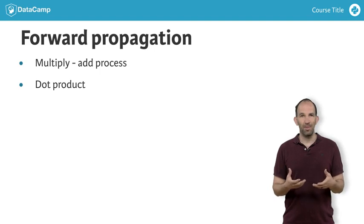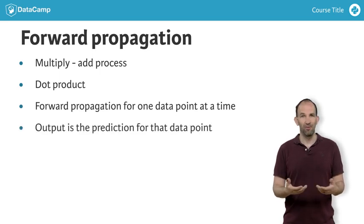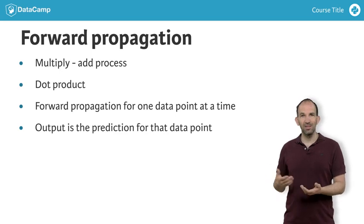This was forward propagation for a single data point. In general, we do forward propagation for one data point at a time. That value in the last layer is the model's prediction for that data point. Let's see the code for this.